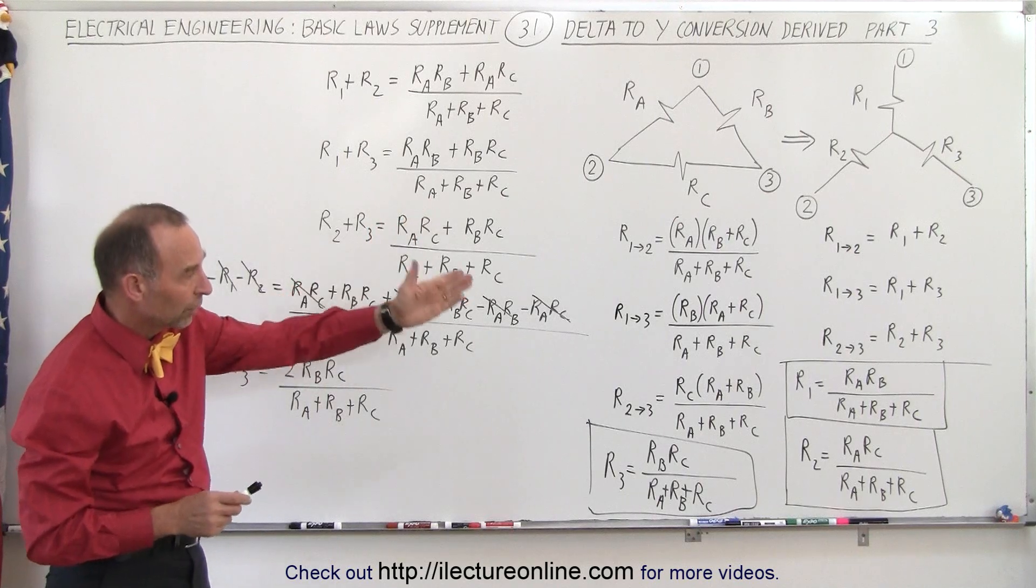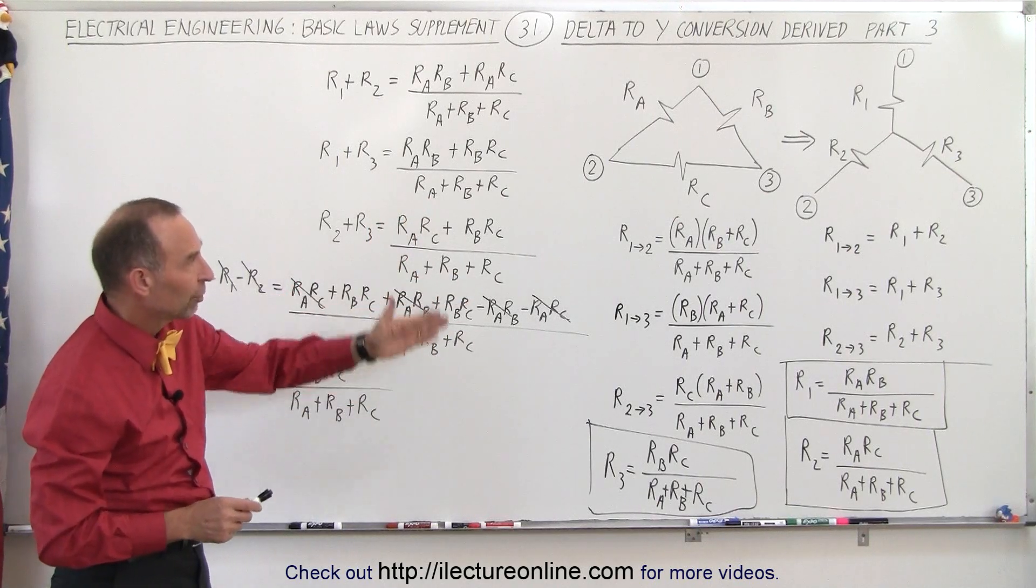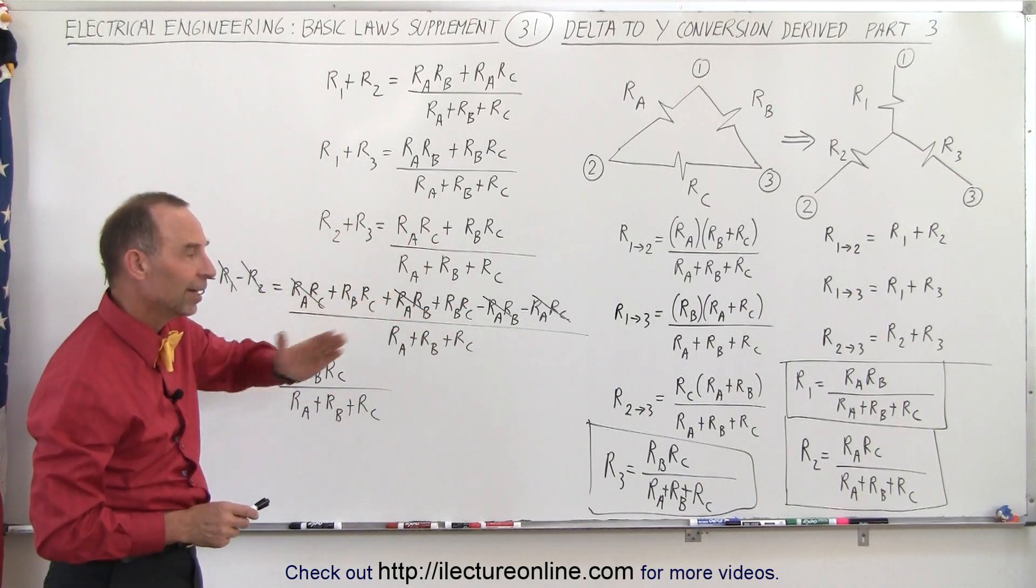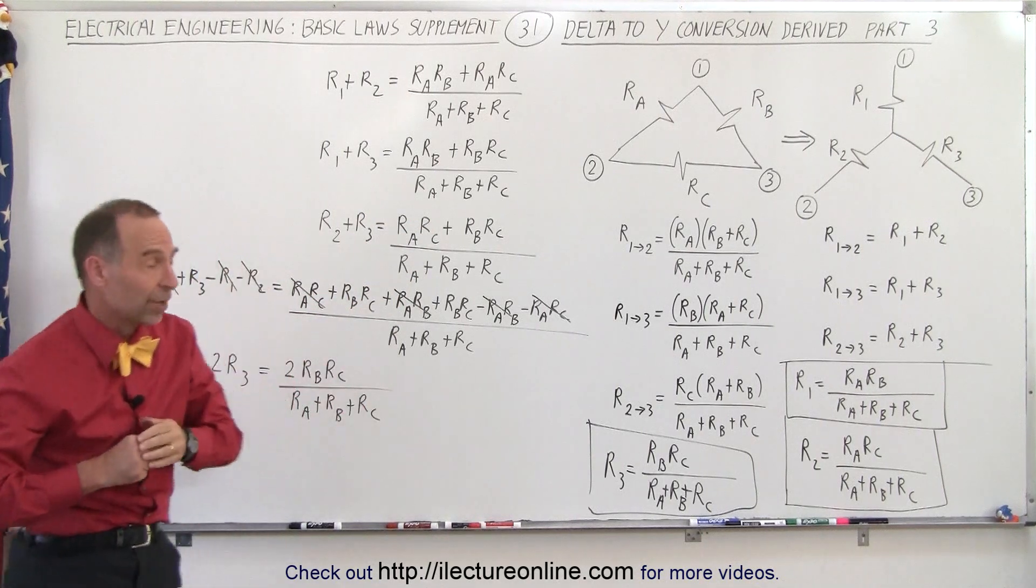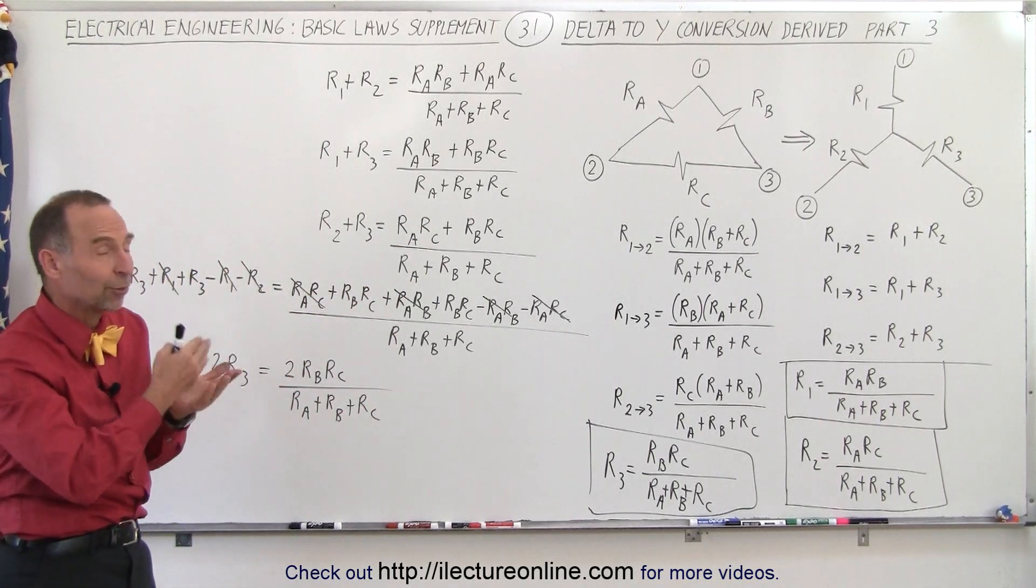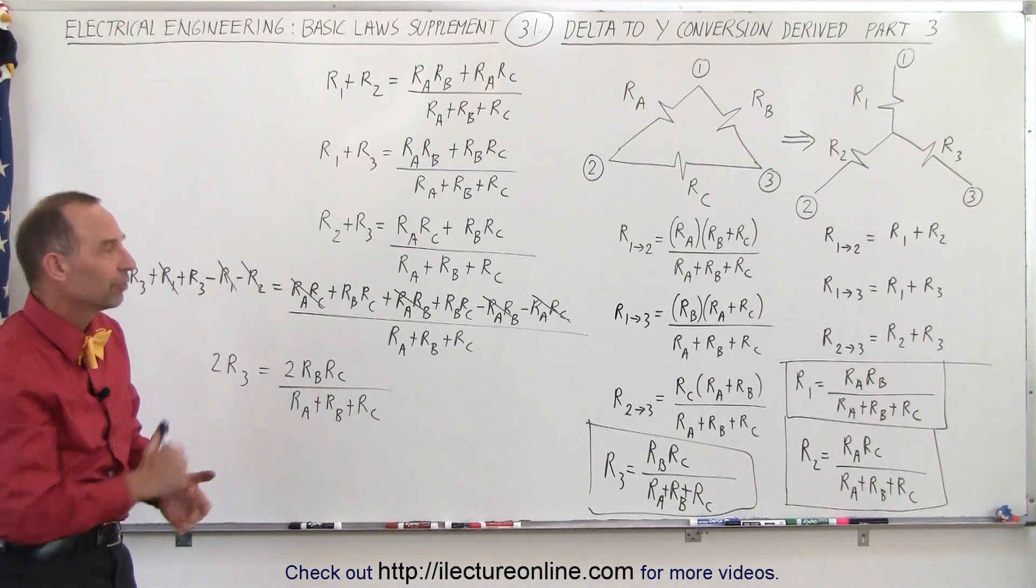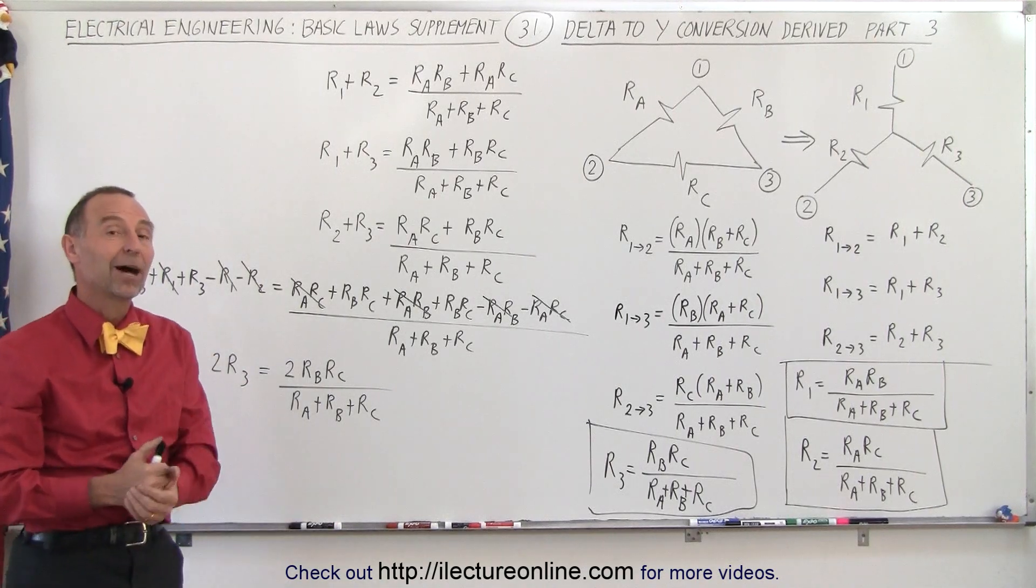So here's the third conversion, and that gives us the value for all three resistors in the Y circuit: R1, R2, and R3 in terms of RA, RB, and RC. And this is a really nice trick to be able to convert from a delta to Y, otherwise it may be very difficult to solve the circuit, and that's how it's done.